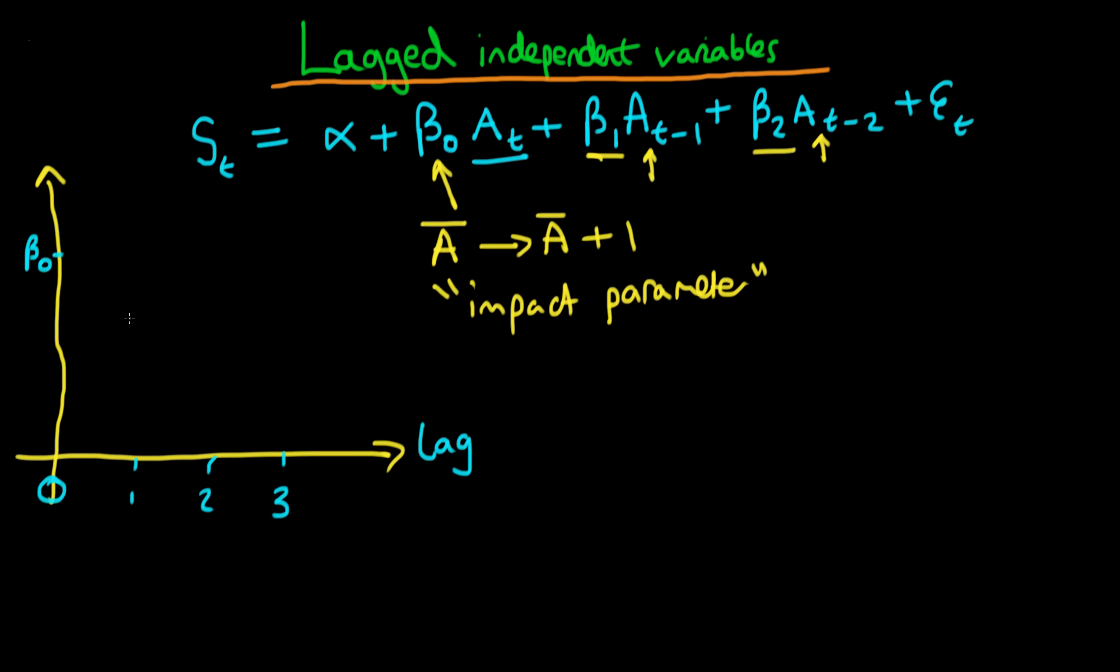And then after one period the effect of advertising is slightly less, so perhaps beta 1, or the effect on sales, is somewhere like that, which is lower than beta naught. And then perhaps after two periods it falls a little bit further, and because there isn't a third lag in this model we essentially are specifying that the effect on sales of advertising three periods from now is zero.